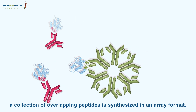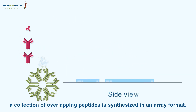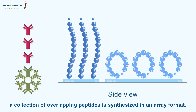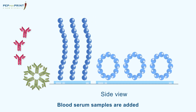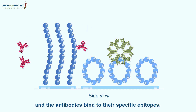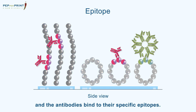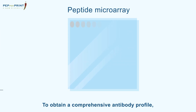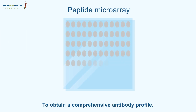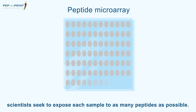To determine the epitope landscape, a collection of overlapping peptides is synthesized in an array format representing the entire protein target. Blood serum samples are added and the antibodies bind to their specific epitopes. To obtain a comprehensive antibody profile, scientists seek to expose each sample to as many peptides as possible.